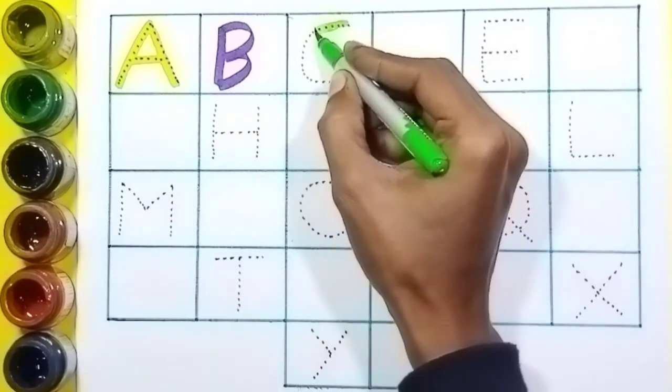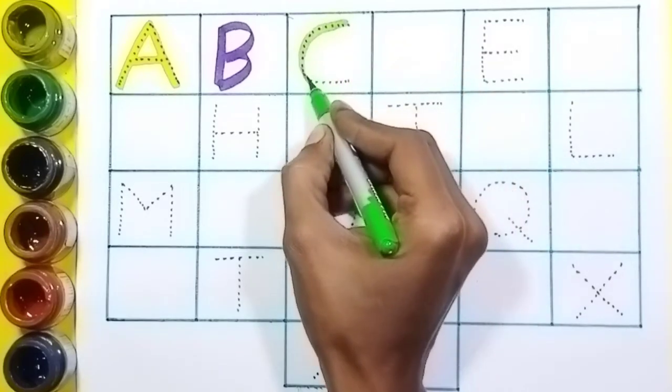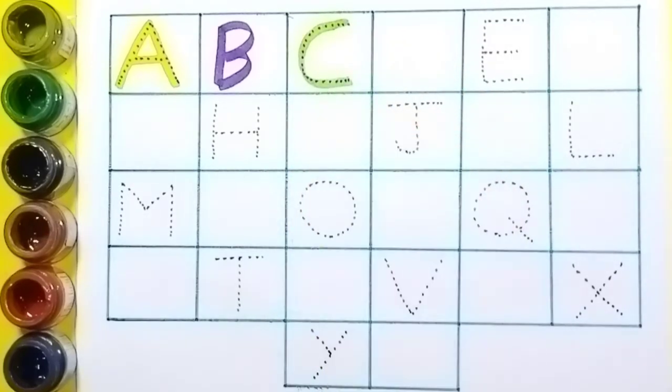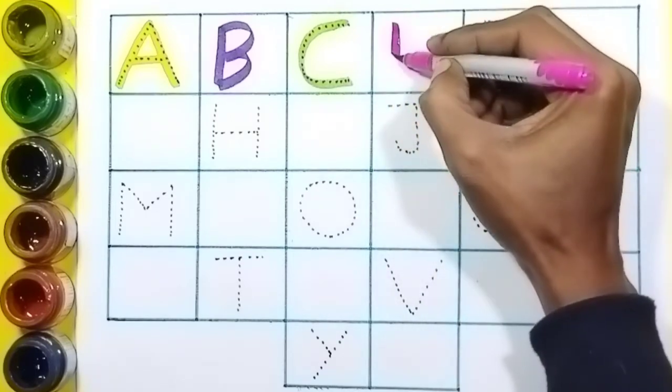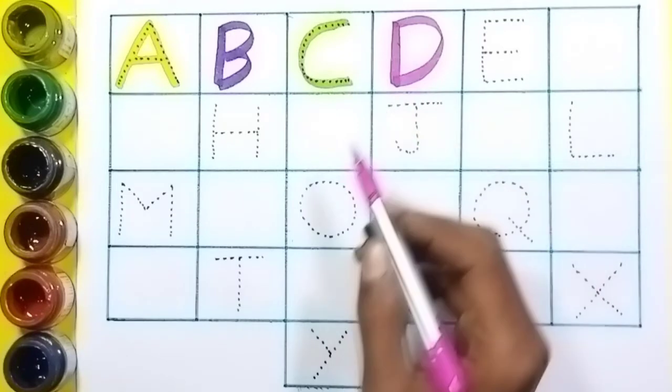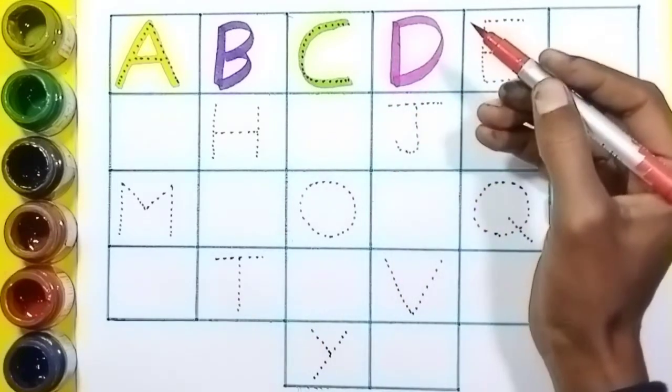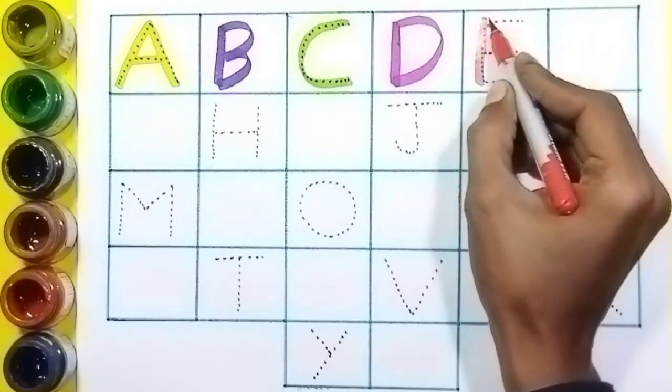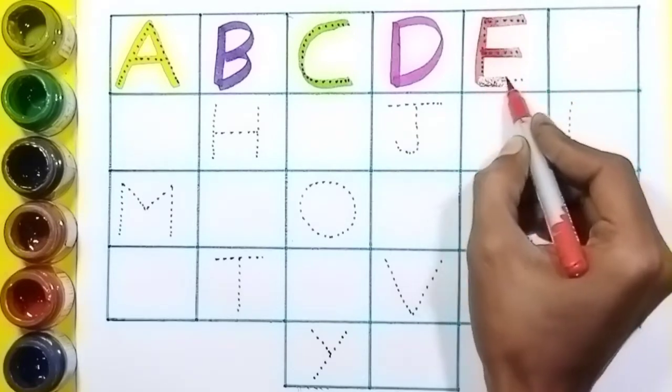A, A for apple, violet color. B, B for ball, green color. C, C for cat, pink color. D, D for dog, red color. E, E for elephant.